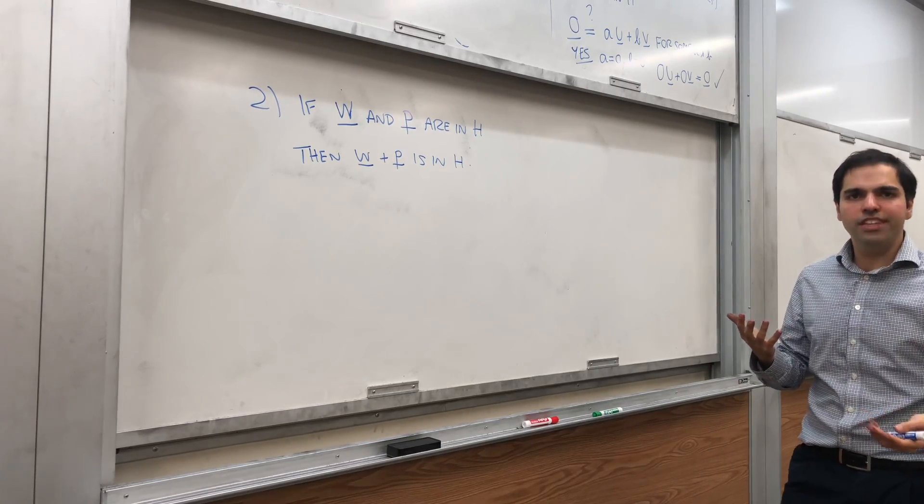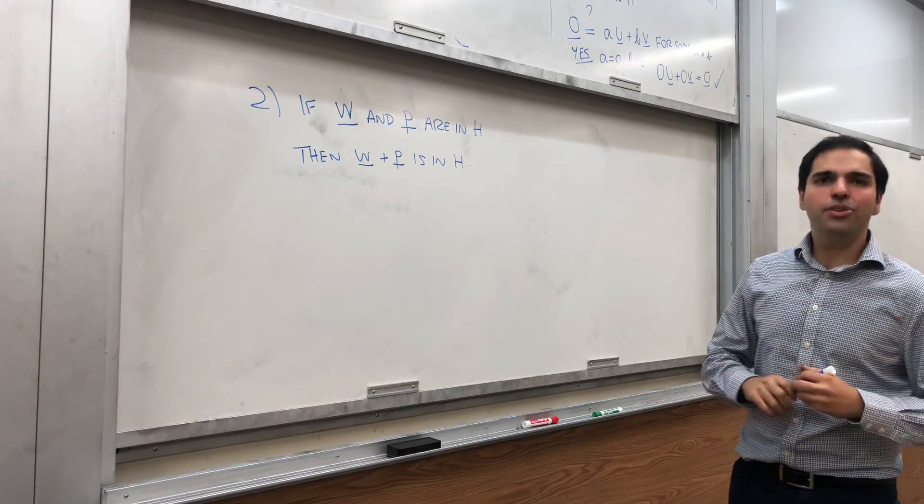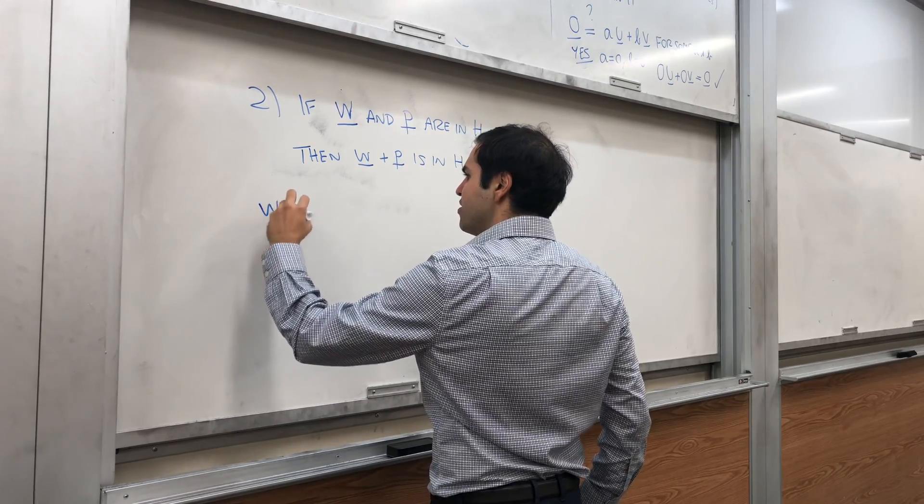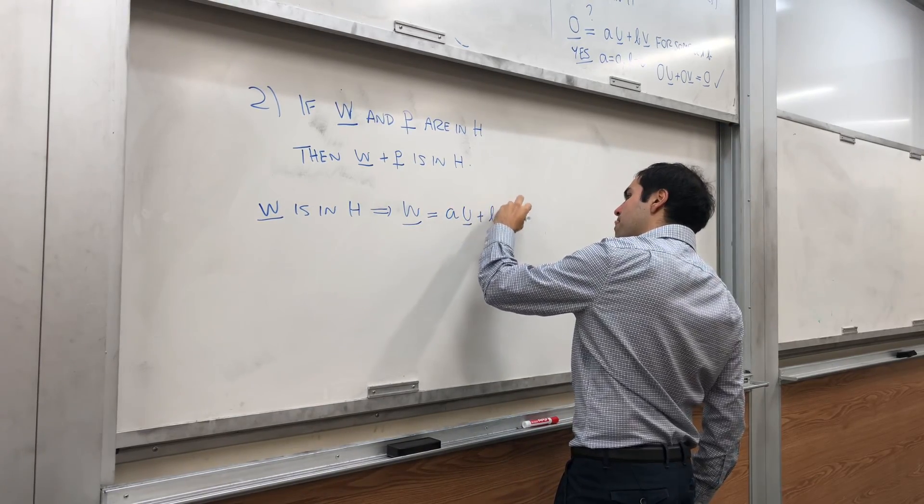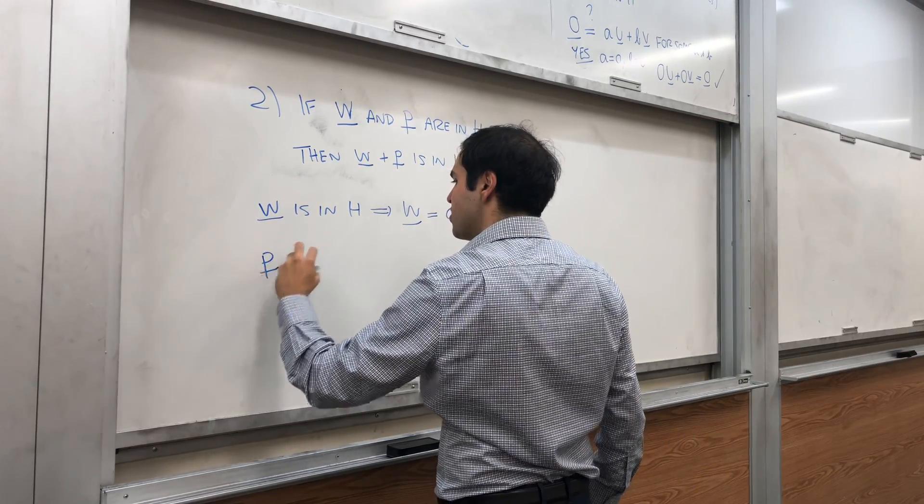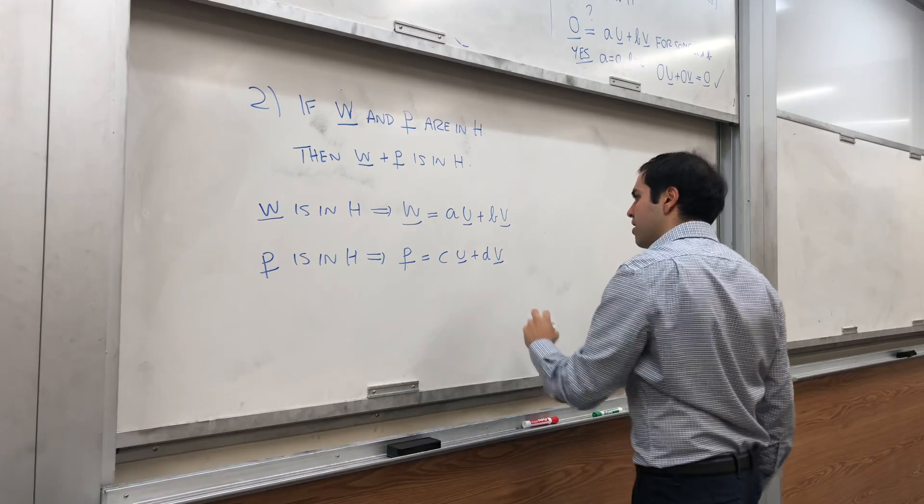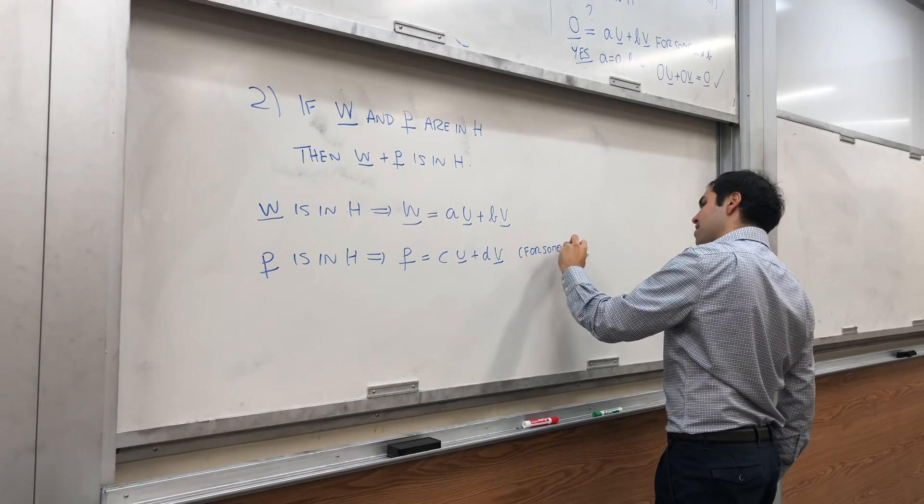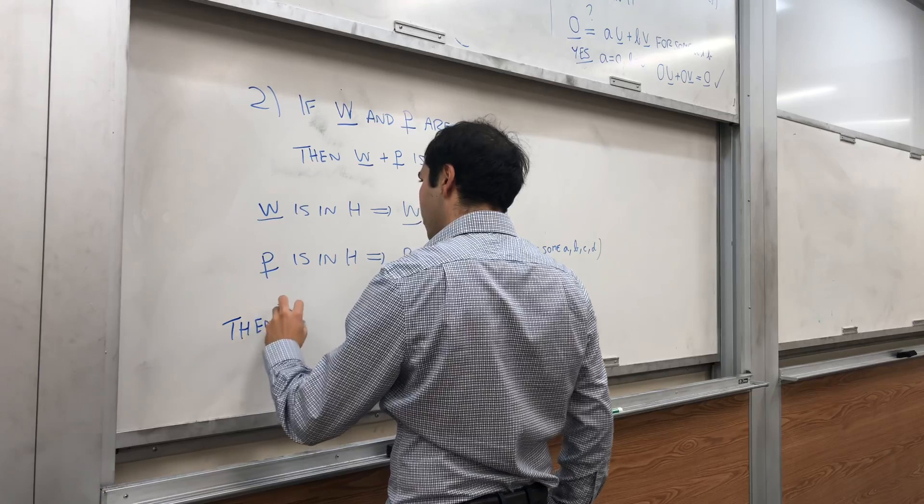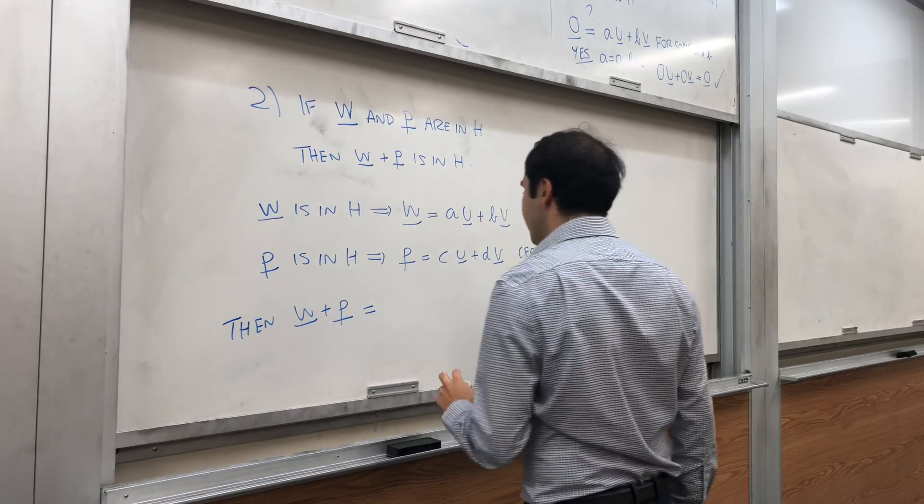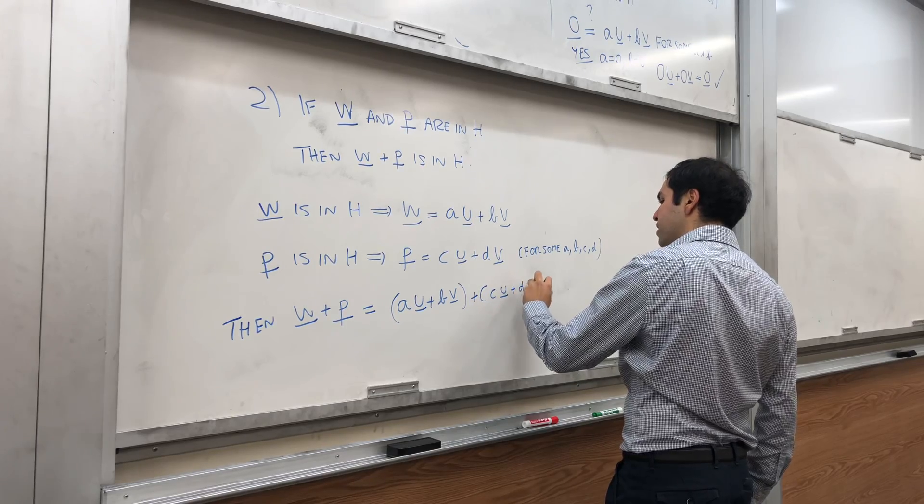And all this is saying is simply, if you have a linear combo of U and V, and you add it to a linear combo of U and V, do you still get a linear combo of U and V? And it turns out yes. So, because W is in H, this implies W is AU plus BV for some A and B, and then P is in H, and this implies P is, let's say, CU plus DV. Again, for some ABCD. And then, let's see, W plus P, that is AU plus BV plus CU plus DV.